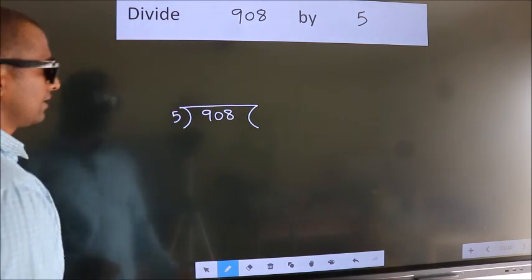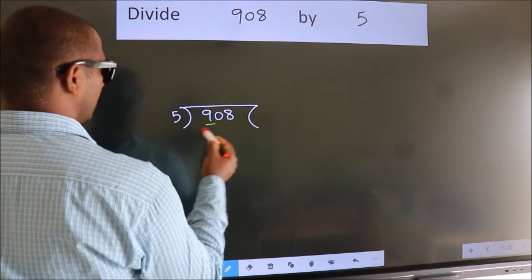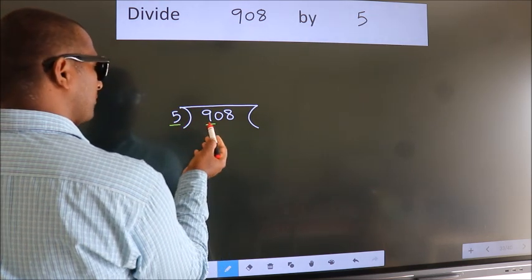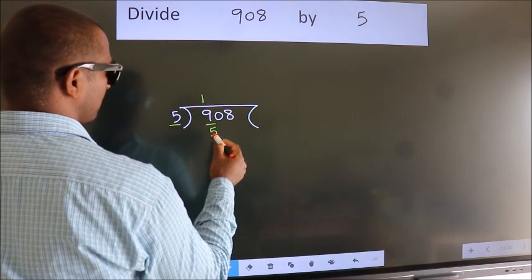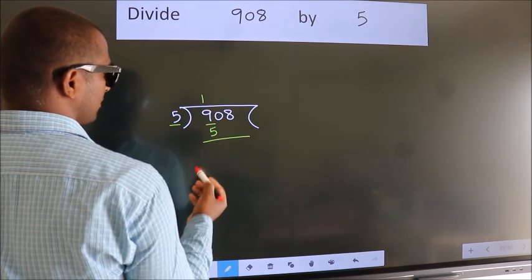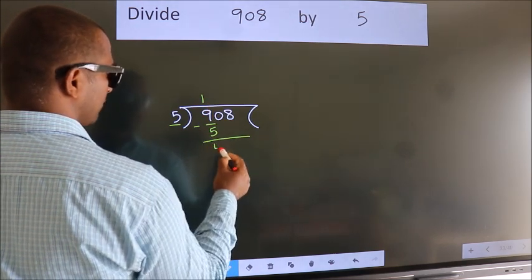Next, here we have 9, here 5. A number close to 9 in 5 table is 5 once 5. Now, we should subtract. We get 4.